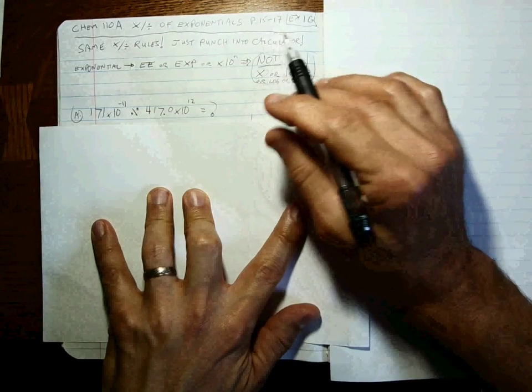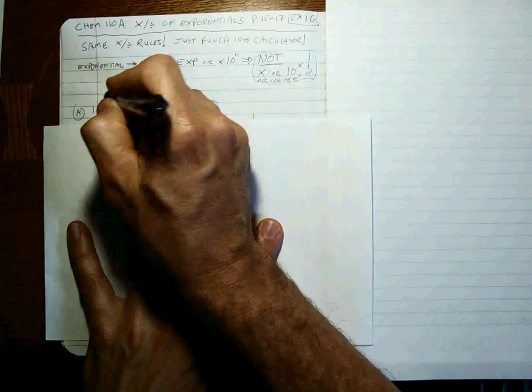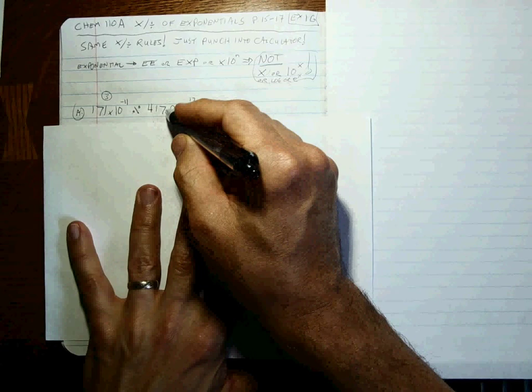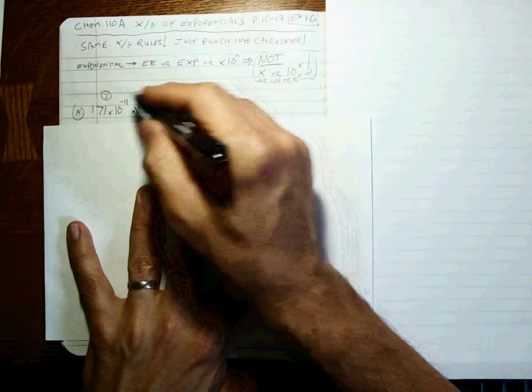And the way you go about deciding that is saying one, two, three in this number sig figs, one, two, three, four in this number. Four divided by three, the answer is going to have three sig figs, right?